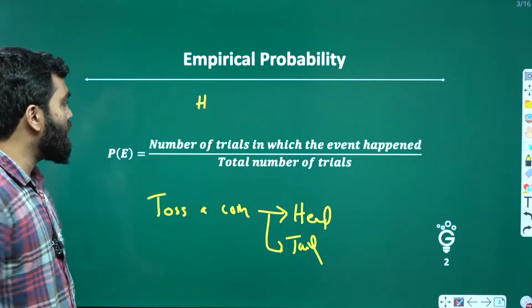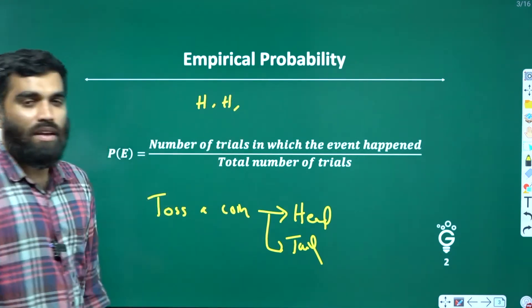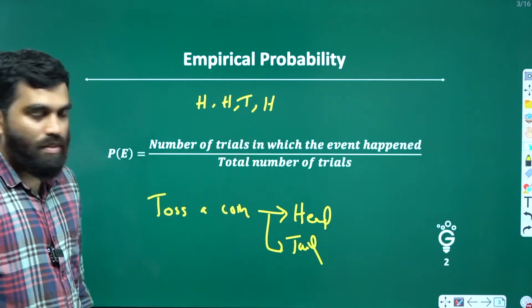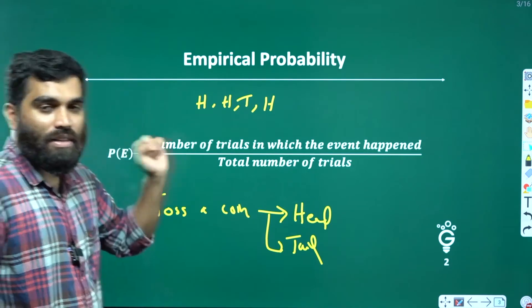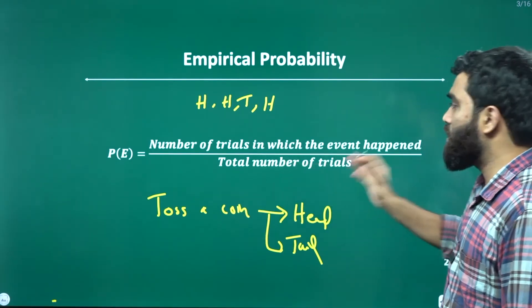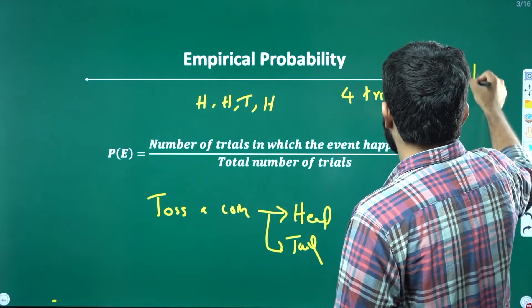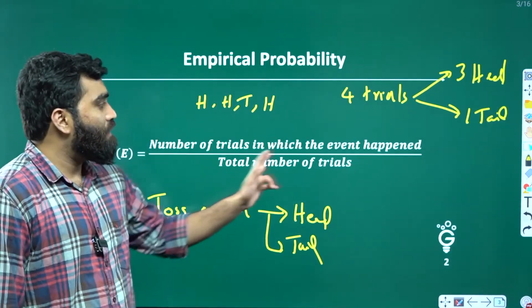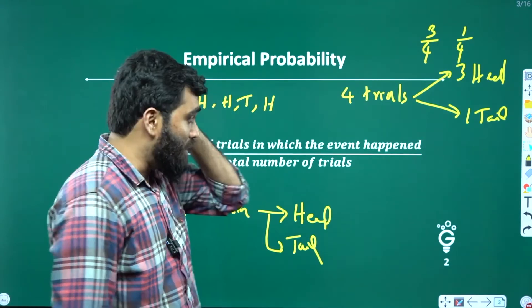Then what do we get? In the first try, we get a head. We have 4 trials total. In those 4 trials, we have 3 heads and 1 tail. The probability of head is 3 by 4. The probability of tail is 1 by 4.